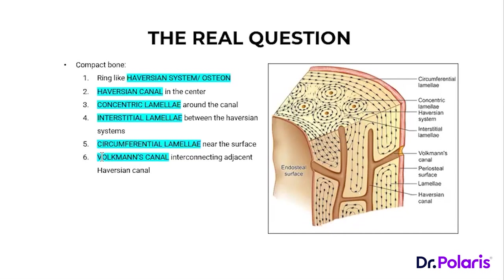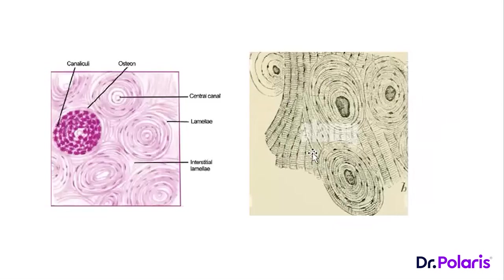Looking at a compact bone slide, you can identify it at a glance. To score full marks in histology, mention the Haversian canal, concentric lamellae, and circumferential lamellae. The actual slide will show concentric lamellae with the Haversian canal, circumferential lamellae at the periphery, and interstitial lamellae in between. Understanding the anatomy of bone makes the histology straightforward.